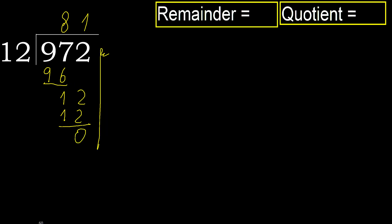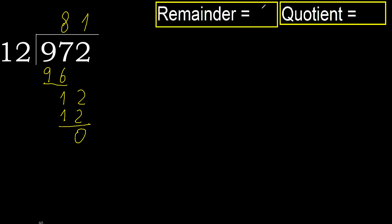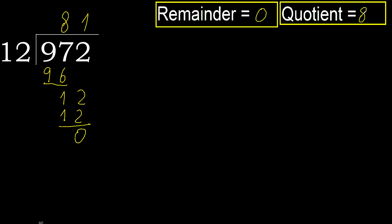There is no remaining number, therefore finish it. So 972 divided by 12 is 81.